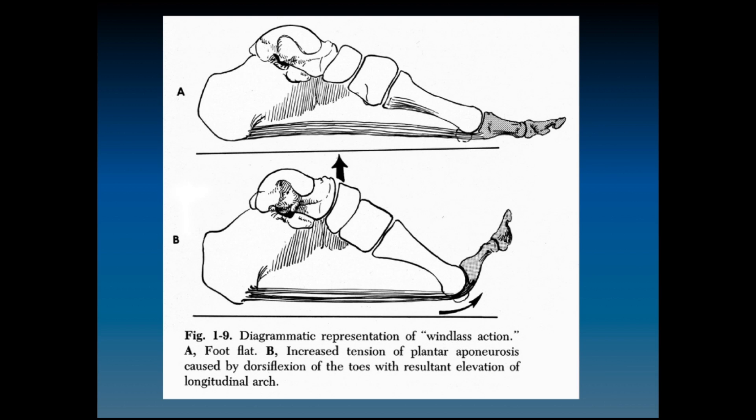The windlass action or windlass mechanism occurs as the foot goes from foot-flat with great toe dorsiflexion. There is increased tension on the plantar aponeurosis caused by dorsiflexion of the toes and then elevation of the longitudinal arch — the windlass mechanism.